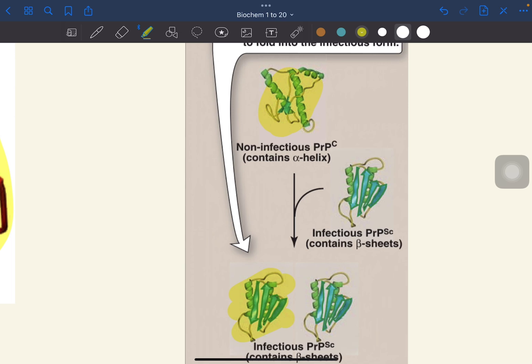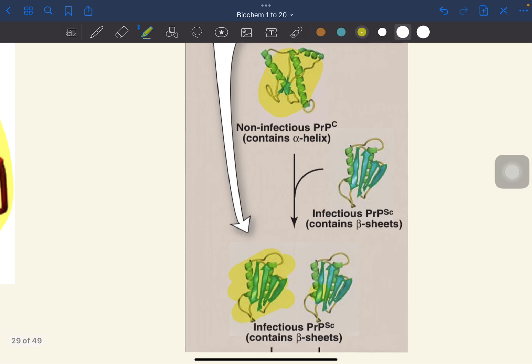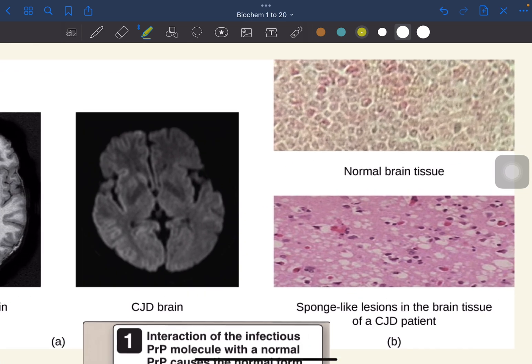These two will interact with other normal prions until both become misfolded. As they multiply and accumulate in brain neurons, eventually the affected brain cells will die.